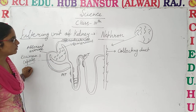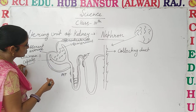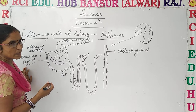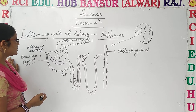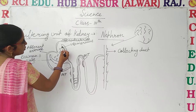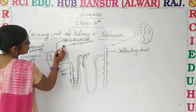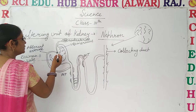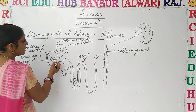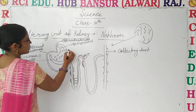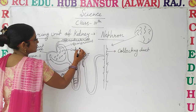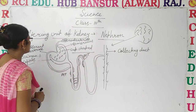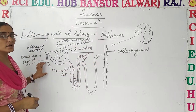As you can see, the structure of the nephron consists of many parts. Here is a capsule-like structure that is known as Bowman's capsule. It is a cup-shaped structure, and it is known as Bowman's capsule.